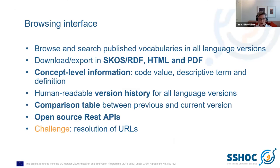The browsing interface is where you can browse and search vocabularies and then download. At the moment we have three formats for download: SKOS, RDF, HTML, and PDF. Of the concepts within the vocabulary, we have three information elements: a code value, the descriptive term, and the definition. The code value is the same in all language versions, and the descriptive term is what gets translated.